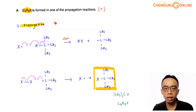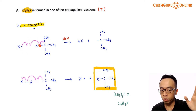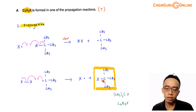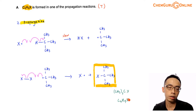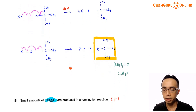Now let us evaluate statement A: C4H9X is formed in one of the propagation reactions. Based on our discussion of the propagation step, the halogen radical forms a bond with hydrogen, breaking the C-H bond and generating a carbon radical. That carbon radical then forms a bond with halogen to produce the C-X bond. The carbon bonded to three methyl groups and a halogen is equivalent to CH3(3)CX, which is also equivalent to C4H9X by molecular formula. So A is true — it is possible to form C4H9X in the propagation step. Statement A is most likely the correct answer.